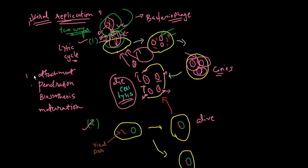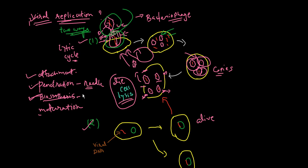To summarize the lytic cycle: first there is attachment of the bacterium and the virus, then penetration using the needle of the bacteriophage. The lysozyme enzyme facilitates penetration, after which biosynthesis takes place — the host cell machinery synthesizes the viral DNA, then RNA and proteins are made.